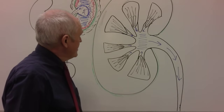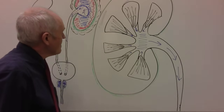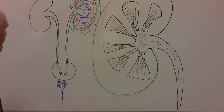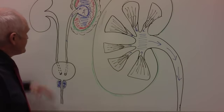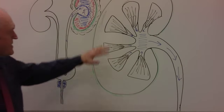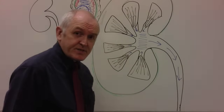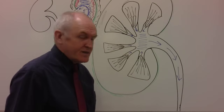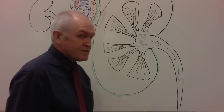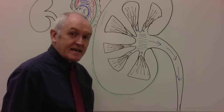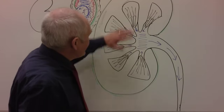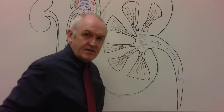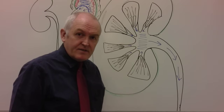The urinary system refers to the whole structure. If we're talking specifically about the kidneys, we talk about the renal system — renal pertaining to kidneys. It is essential for filtering the blood, removing impurities, maintaining the homeostatic balance of the blood, and passing everything we don't need into the urine to be eliminated and excreted from the body.